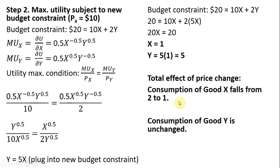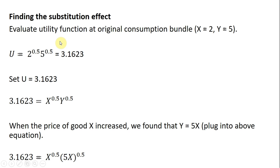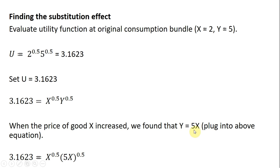Now let's find the substitution effect. We evaluate the utility function at the original consumption bundle from step 1 — X equals 2 and Y equals 5. Plugging those values into the utility function gives U equals 3.1623. Setting U equal to 3.1623 in our utility function, we take the result from step 2 where Y equals 5X and plug it into this equation.